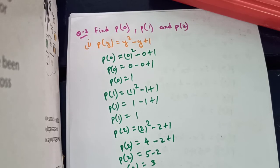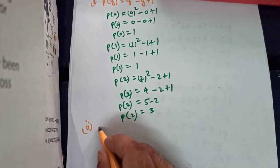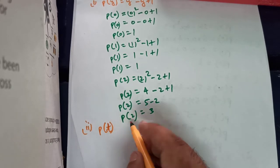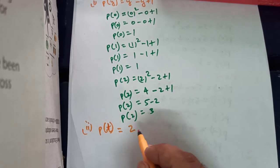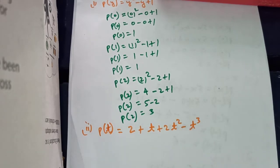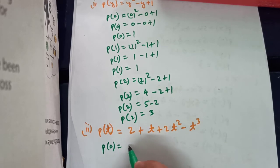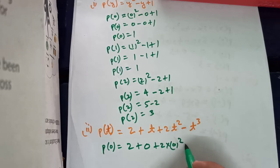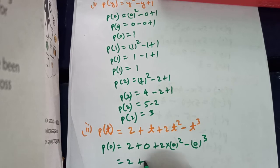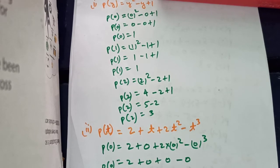Now the second part: we have to find p(0), p(1) and p(2) for the polynomial p(t) where p(t) equals 2 plus t plus 2t squared minus t cubed. For p(0), substituting t as 0: we get 2 plus 0 plus 2 times 0 squared minus 0 cubed. Everything with t becomes 0, so the value of p(0) is equal to 2.